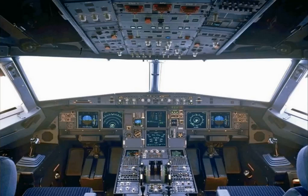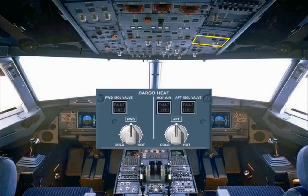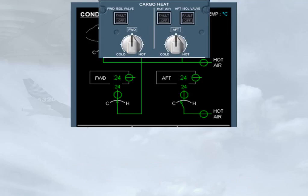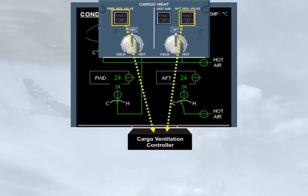On the overhead panel, there is a cargo heat panel which contains the controls related to cargo heating, if installed, and cargo ventilation. For each cargo compartment, there is an isolation valve push-button switch. These push-button switches normally remain in their lights-out auto position, in which case the cargo ventilation controller will automatically open and close the isolation valves.